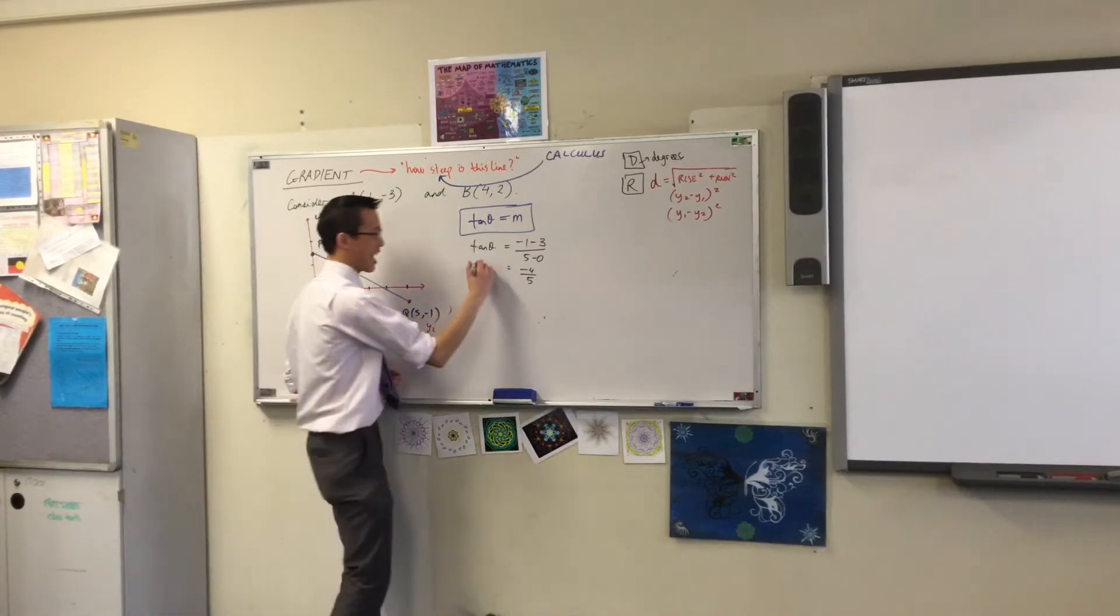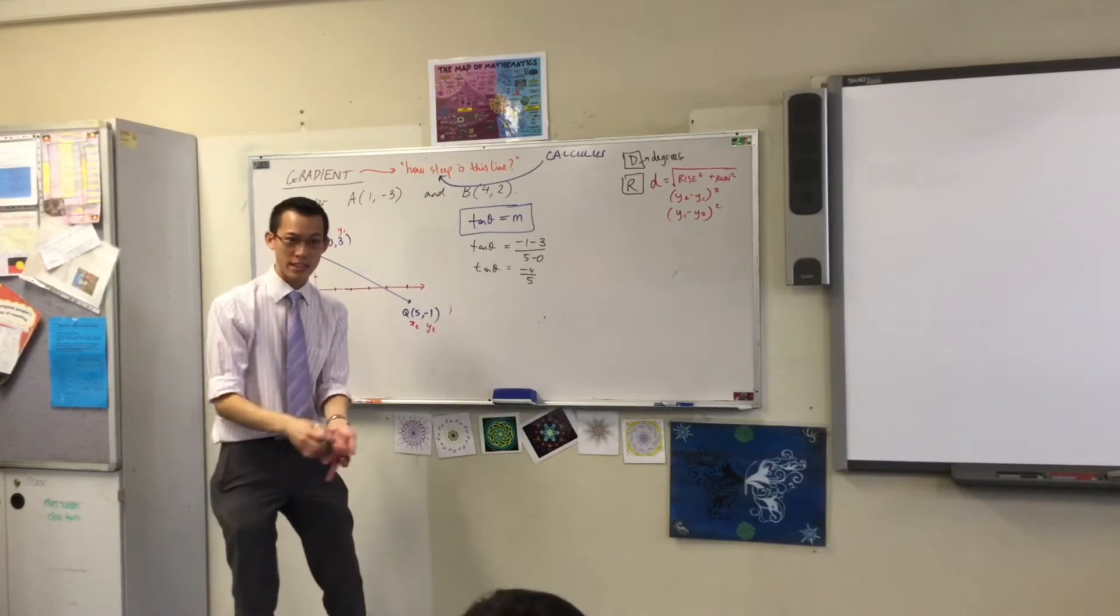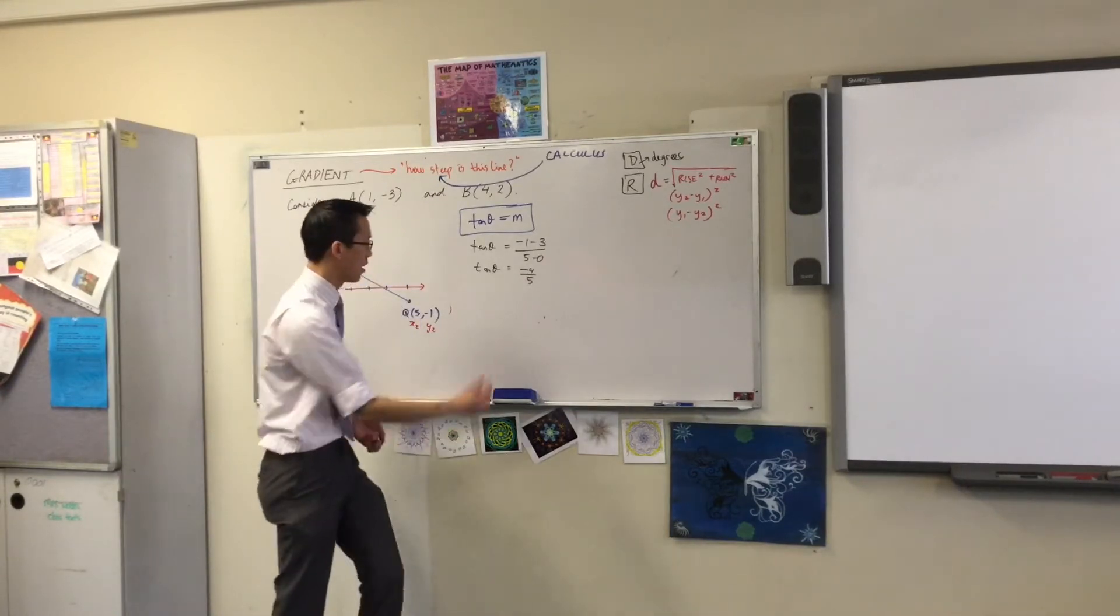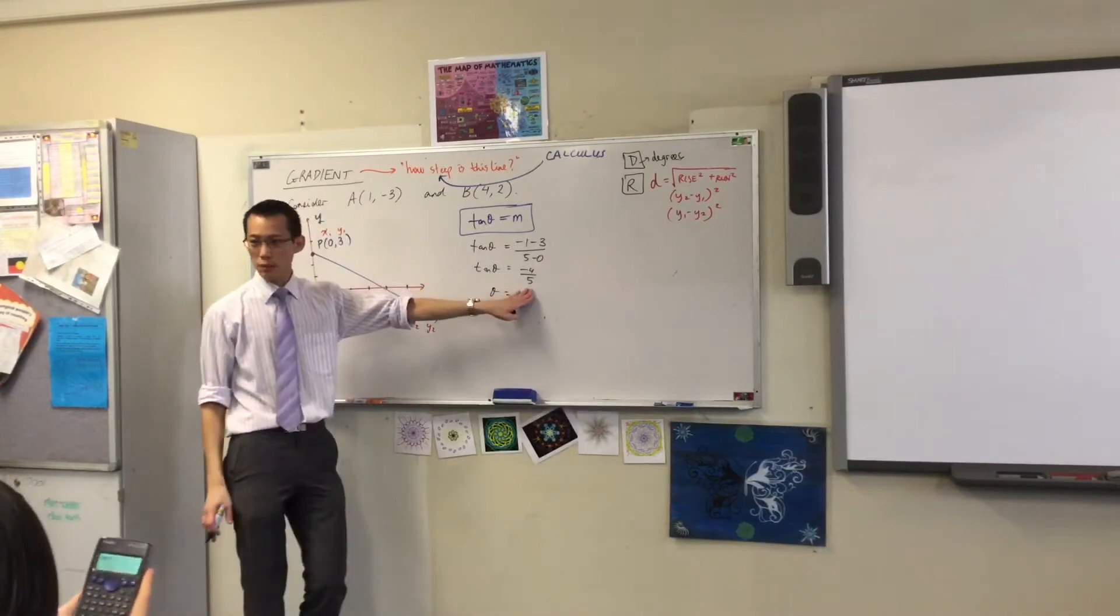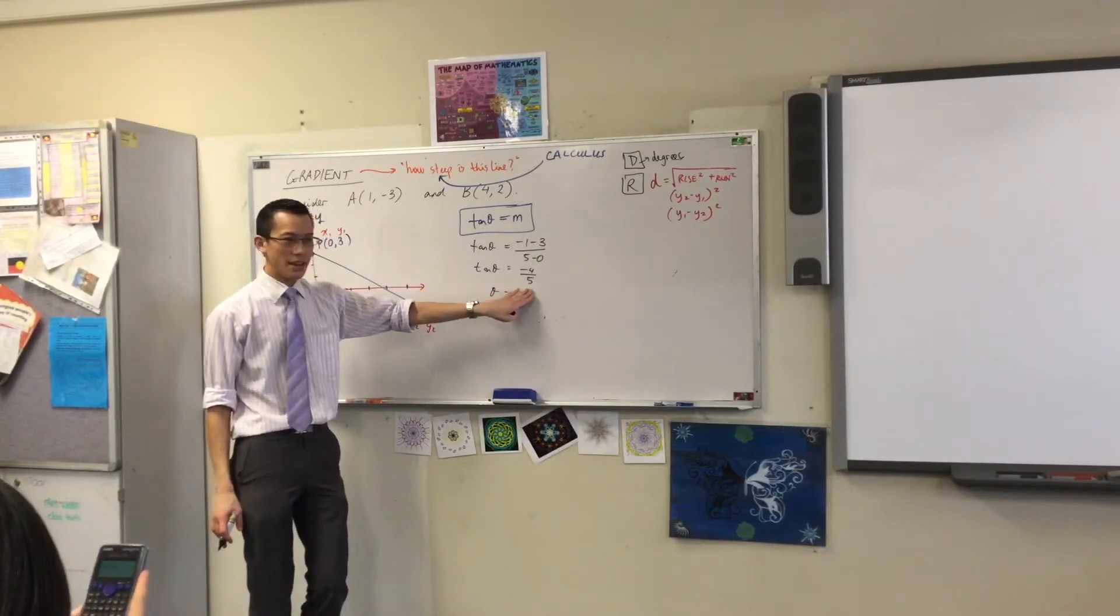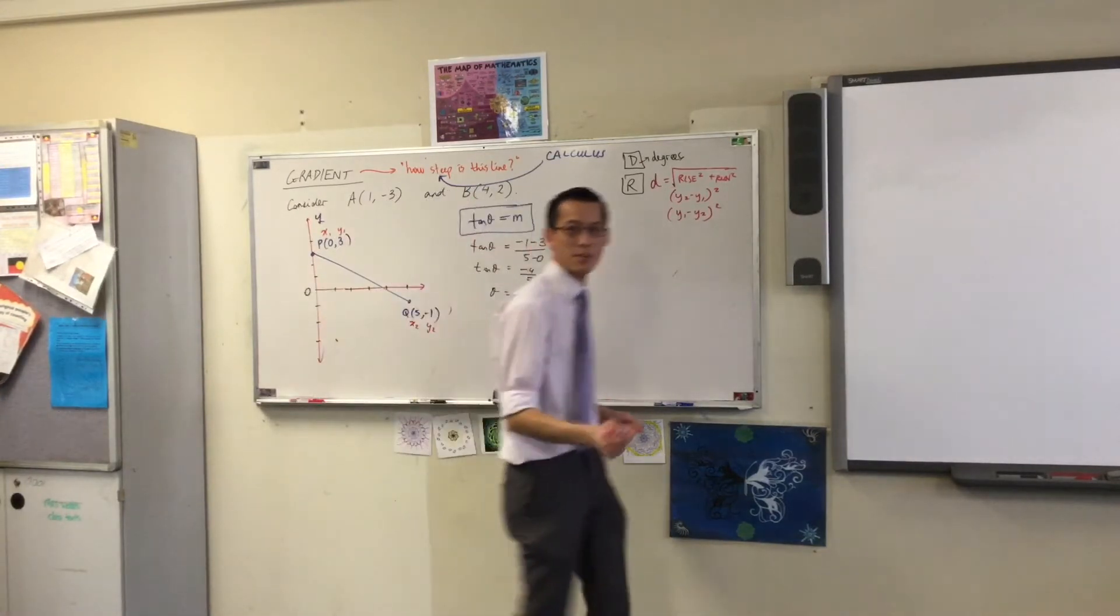Right, now tan theta equals that, but I want theta, not tan theta. So you reach for your calculator, you say shift tan, tan inverse, and then you supply this number. Now, I want you to notice what happens when you press equals. Can someone give me the number?